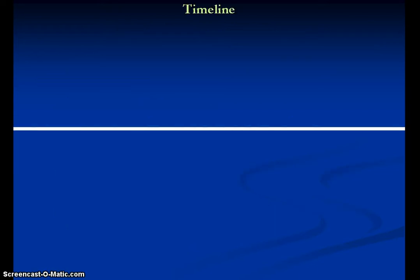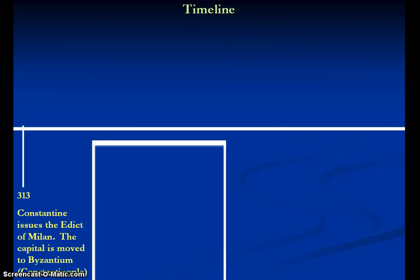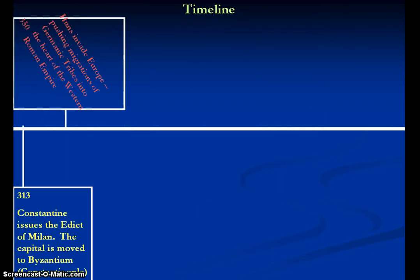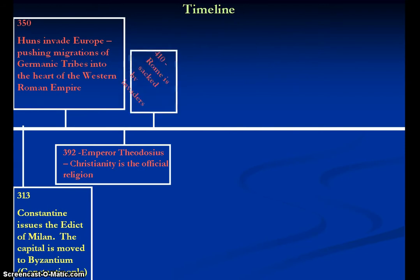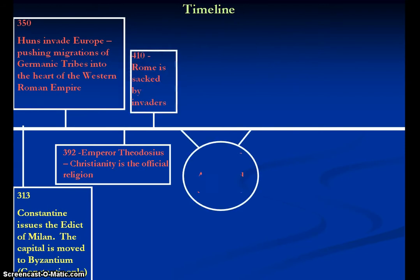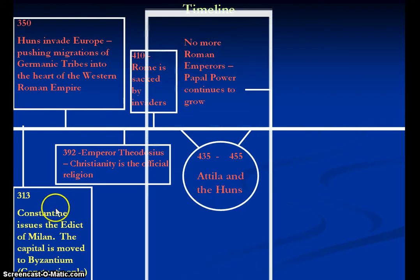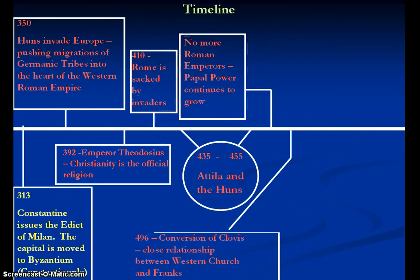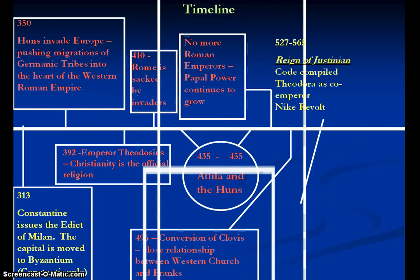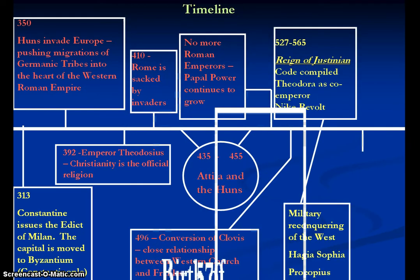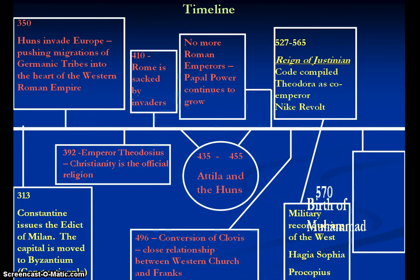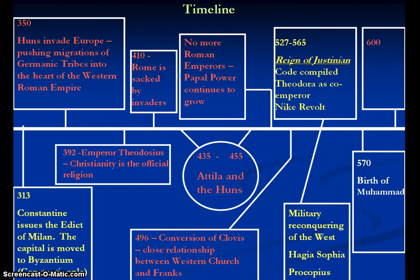With these next two slides, let's tackle that first overall question. Starting at the bottom here: 313, Constantine issues the Edict of Milan, and the capital is moved to Byzantium, Constantinople. We see this shift to the east with the old Roman Empire before it falls.